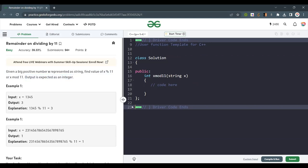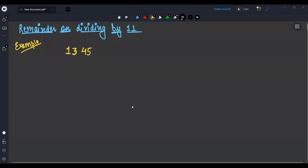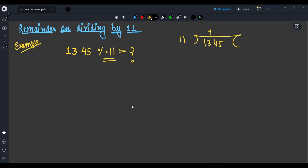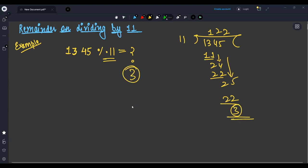Let's understand the question. If I do 1345 modulo 11, what will be the answer? That means I have to find the remainder when I divide 1345 by 11. So 11 into 11 is 0, then 24 remainder 2, 11 into 22 is 22, now 3. So remainder is 3. That is the answer.